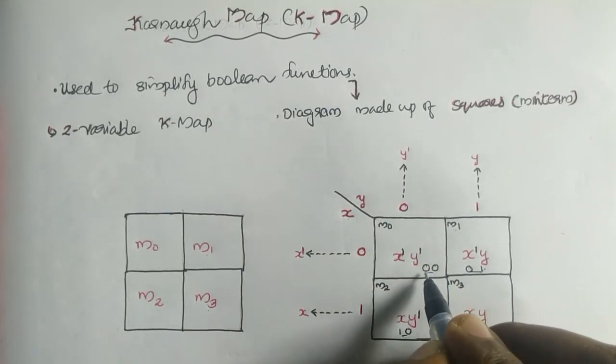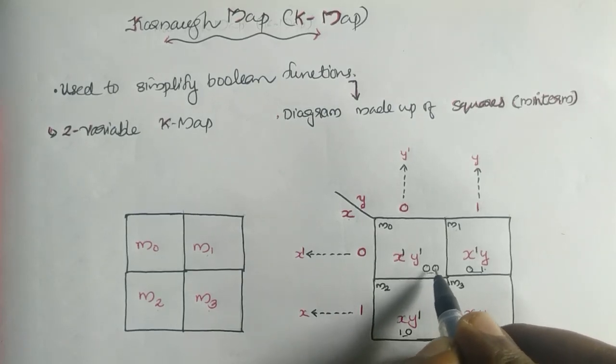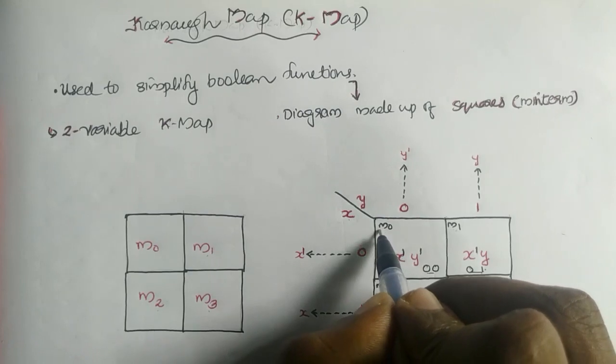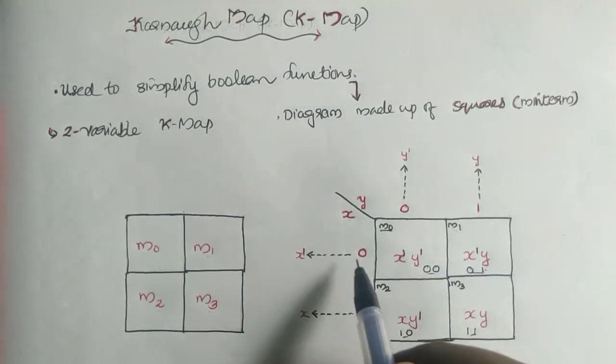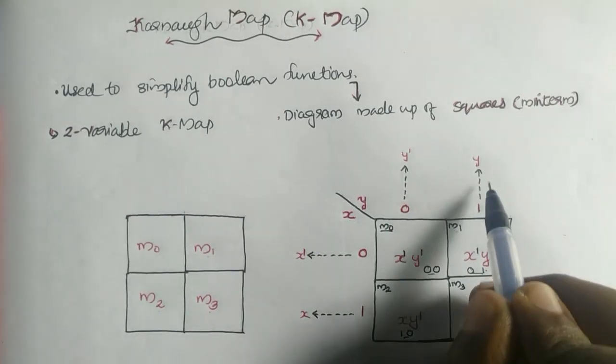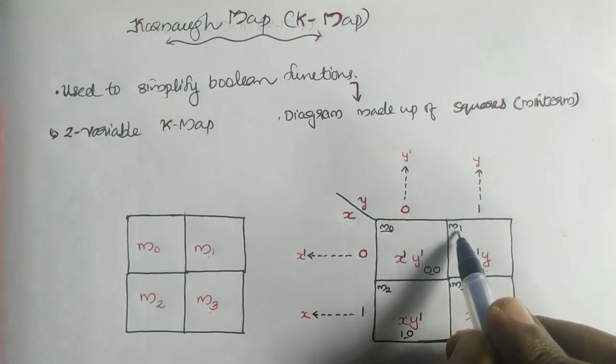Say 0,0. This 0,0 in binary defines 0. So we name it as M0. Another element is 0,1 or X bar, Y. The 0,1 represents a decimal one, so M1, the minterm one.